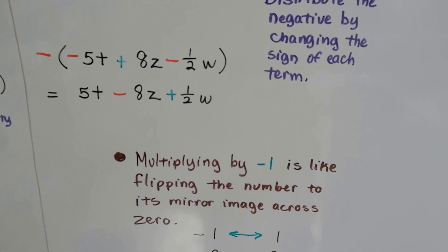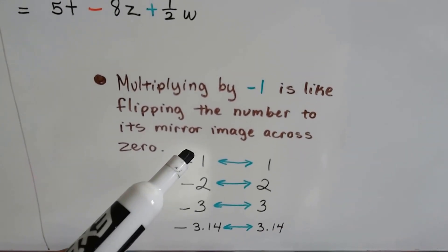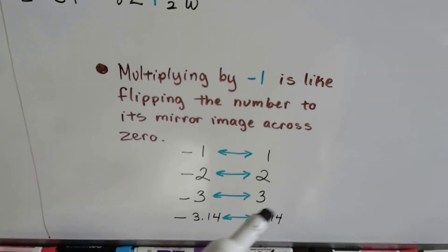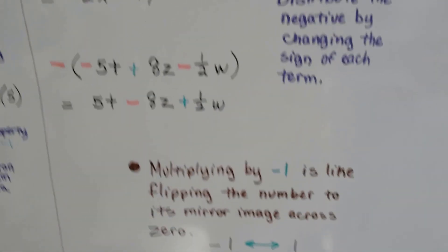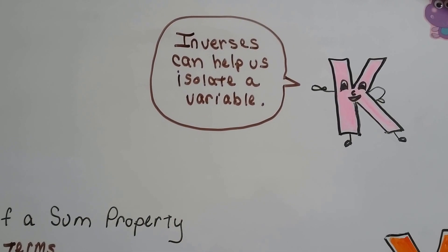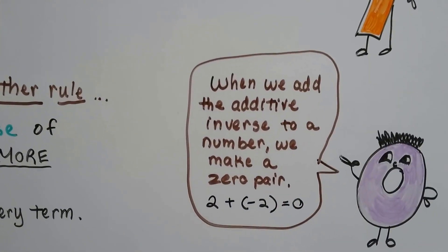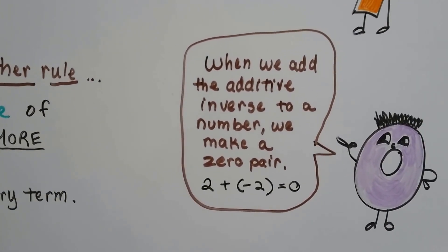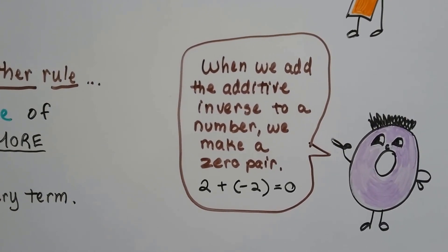So multiplying by negative 1 is like flipping the number to its mirror image across 0. Negative 1's inverse is positive 1. Negative 2 is positive 2. Negative 3 is positive 3. Negative 3.14 is positive 3.14. And inverses can help us isolate a variable. That's going to be very helpful in the future. So when we add the additive inverse to a number, we make a zero pair. When we have positive 2 and we add negative 2, we make a zero. Positive 2 and negative 2 are a zero pair.